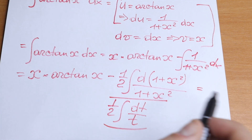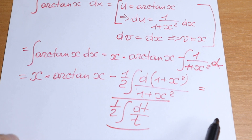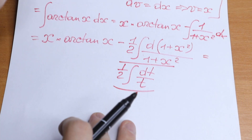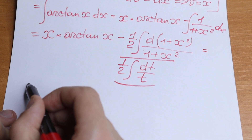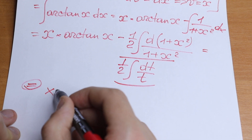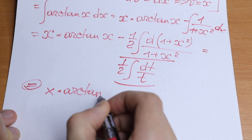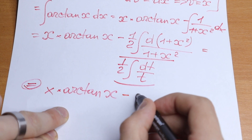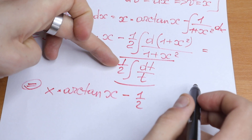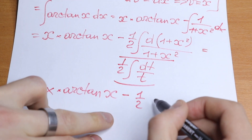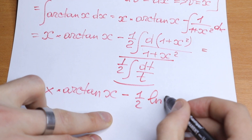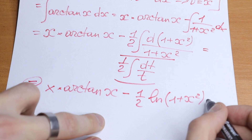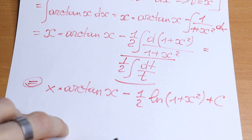Let's write our final answer. We will have x times arctan(x), minus one half — the constant in front of the integral — times the natural log of (1 + x²), because t equals (1 + x²), plus C. And this is our answer.